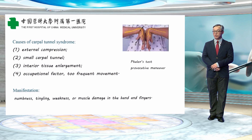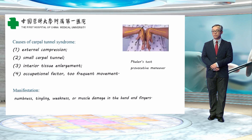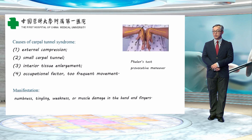The causes of carpal tunnel syndrome are: first, external compression; second, small carpal tunnel; third, interior tissue enlargement; fourth, occupational factors, often meaning too frequent movement. On the right you can see the Phalen's test as a provocative maneuver to induce the symptoms of carpal tunnel syndrome.